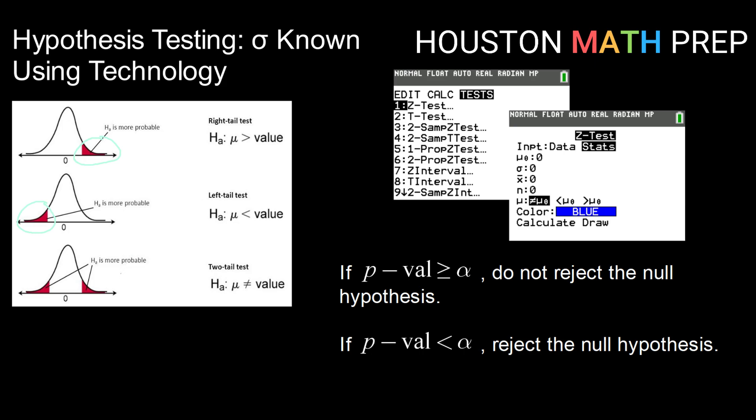So this technology uses a little bit of a different approach. Instead of calculating a rejection region, what it does is it calculates the probability, or what we're going to call the p-value, of having a sample with a mean of x-bar given that mu is equal to the value in your null hypothesis. So if you truly are working with a population that does have the mean value that you've said in the null hypothesis, what is the probability of getting a sample with that x-bar mean?